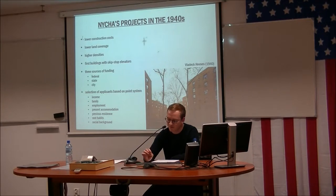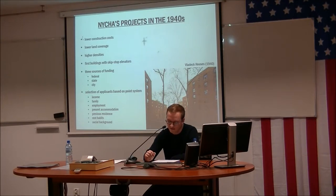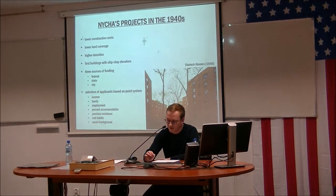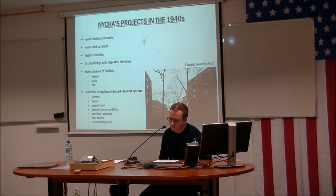NYCHA was also innovative in yet another aspect: already at First Houses, prospective tenants were subject to an elaborate selection system. Each candidate was examined based on seven categories — income, family, employment, present accommodation, previous residence, rent habits, and social background — with a specific number of points given for each. Even though it seems a rather discriminatory policy, it was a great tool for allowing only those able to take care of the new apartments to benefit from NYCHA's projects. This entire experimental phase in the history of NYCHA turned out to be one of the reasons for its very survival over the next decades.